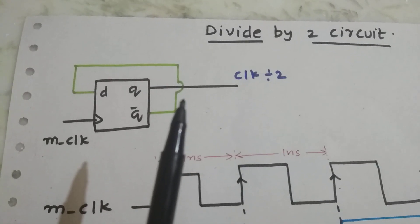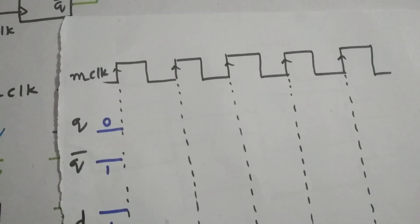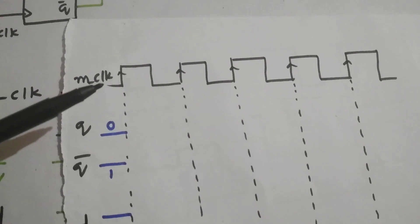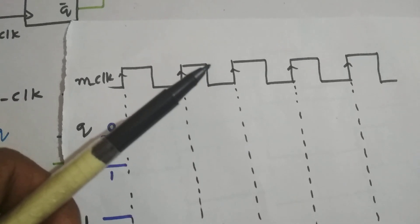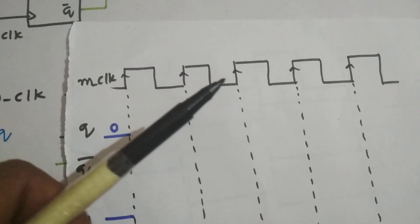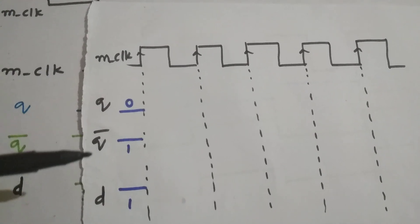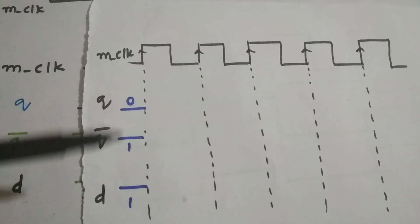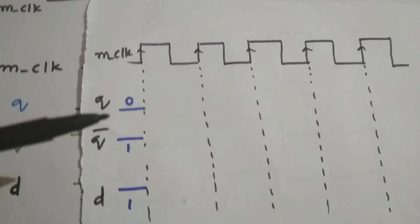Let us get a better understanding by using the waveforms. As you can see, this is a master clock with a time period of 1 nanosecond, and let us assume that the values of Q, Q bar, and D as 0, 1, and 1. Now let us draw the waveform.